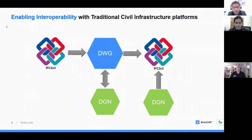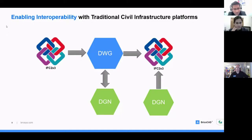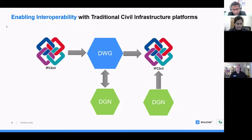BricsCAD is completely industry-standard DWG-based compatible and BuildingSMART certified for IFC interoperability, as well as interoperability with traditional civil infrastructure platforms like DGN, LandXML, simple text files, and CSV files. Creation of alignments and strings can also be done inside BricsCAD.